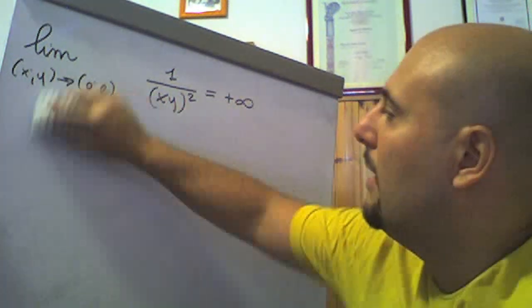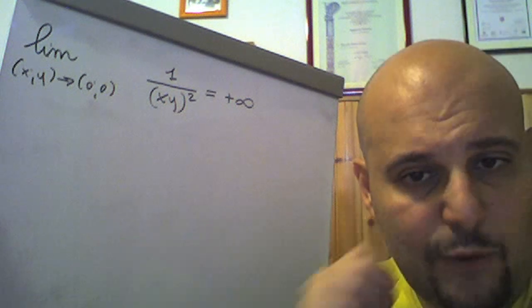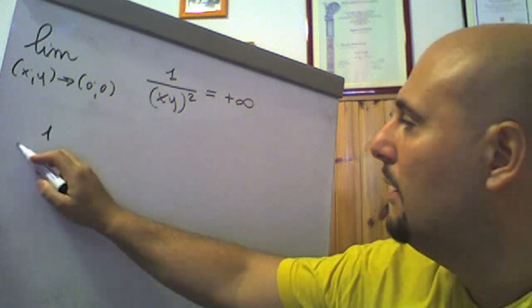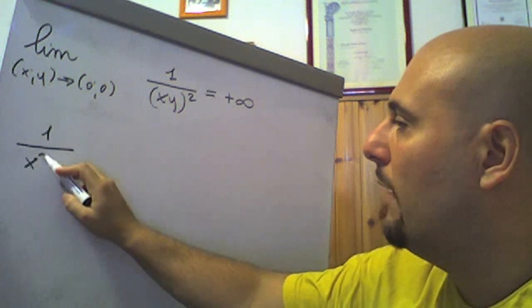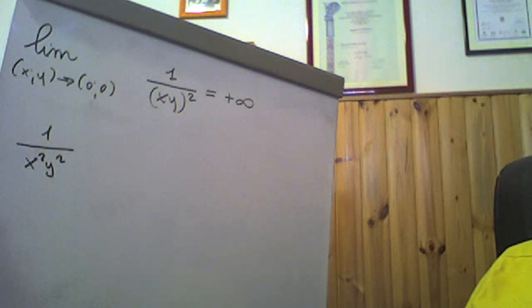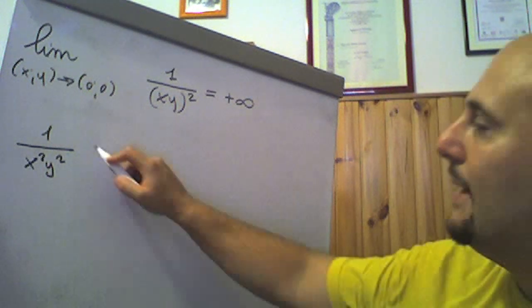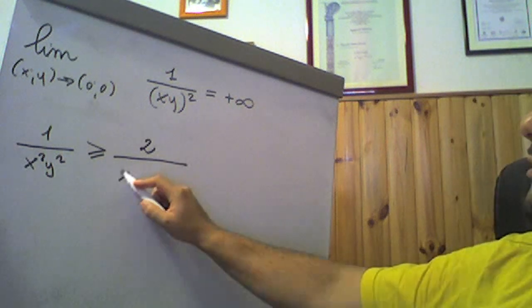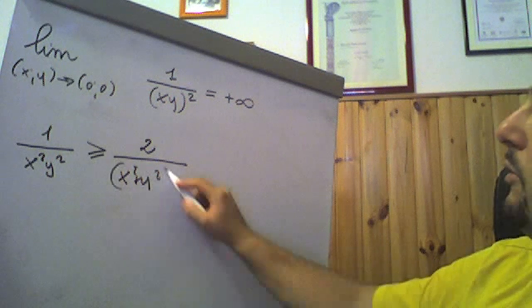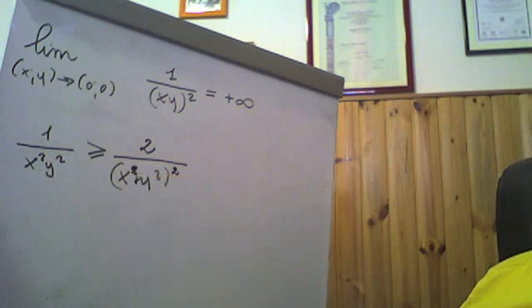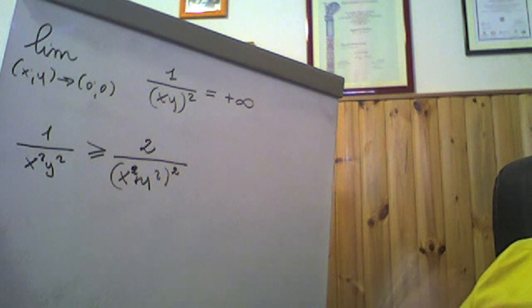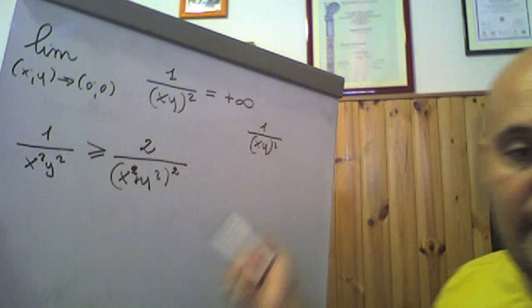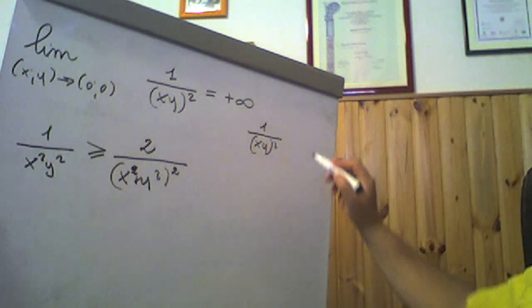Possiamo facilmente effettuare una maggiorazione. Prendiamo 1/(xy²), che possiamo anche scrivere come 1/(x²y²). Questa quantità è maggiore o uguale del rapporto fra 2 e (x²+y²)². La nostra richiesta, ovvero quello che vogliamo dimostrare, è che 1/(xy²), quindi anche 1/(x²y²), sia maggiore di k, per qualunque k positivo dato.